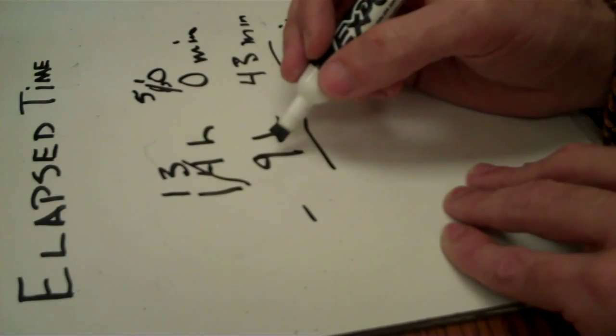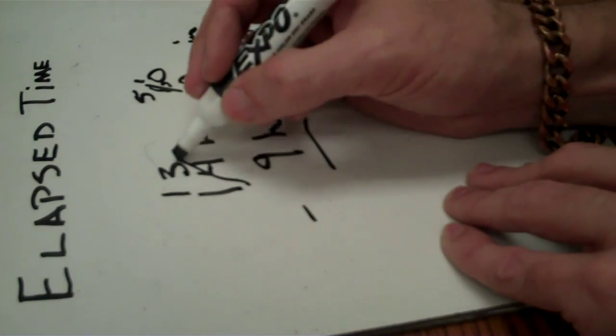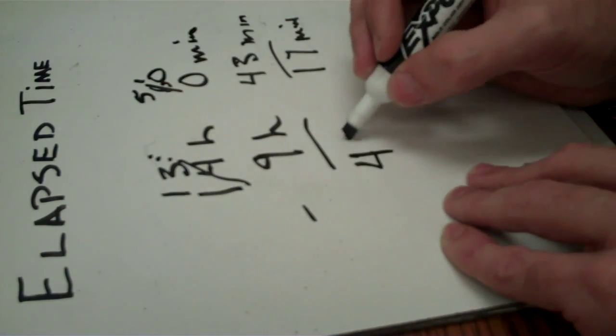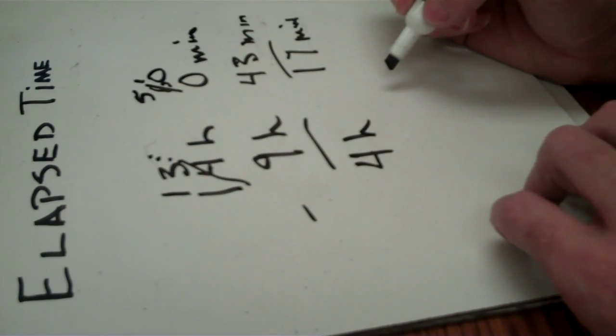And then we just subtract the 9 from the 13, which would be 4. So we end up with 4 hours and 17 minutes on that one after we subtract.